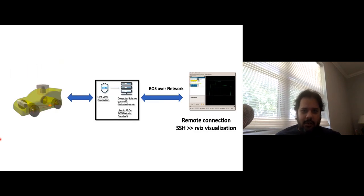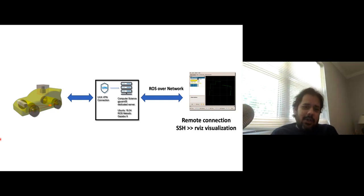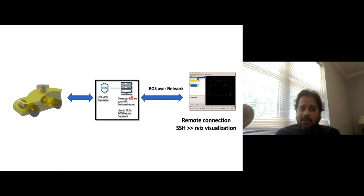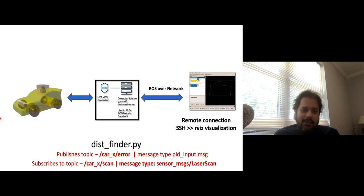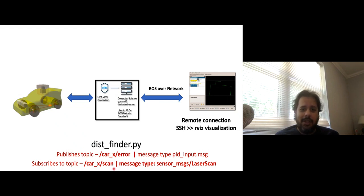By the end of the previous video, you should know how to connect to your virtual car on the server, which runs behind UVA's virtual private network. If you are able to visualize and run teleop as per the previous video's instructions, you're in good shape to attempt this wall following assignment. The first thing you have to do is write a node called distance_finder, abbreviated as dist_finder.py.